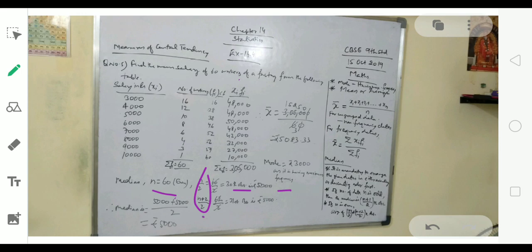After 28, the salary 5000 is repeated for the next 10 people up to 38. So 5000 plus 5000 divided by 2, the average of these two observations, the 30th and 31st, is 5000 rupees. This becomes the median.